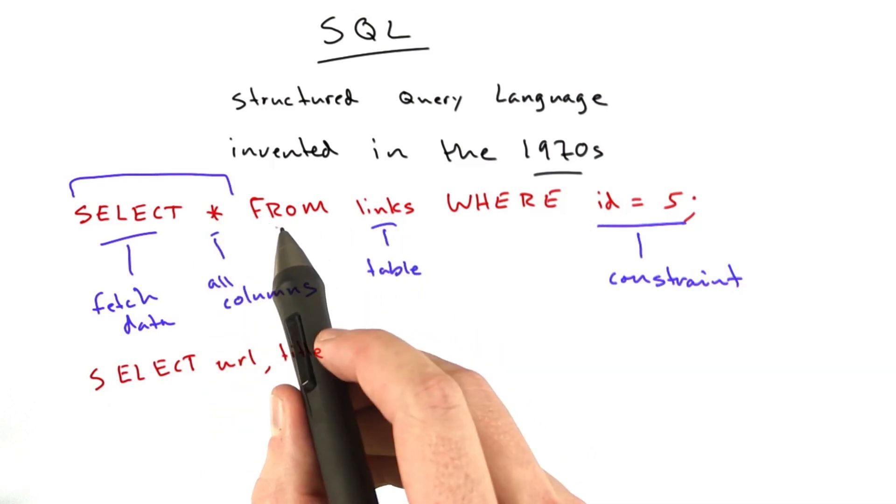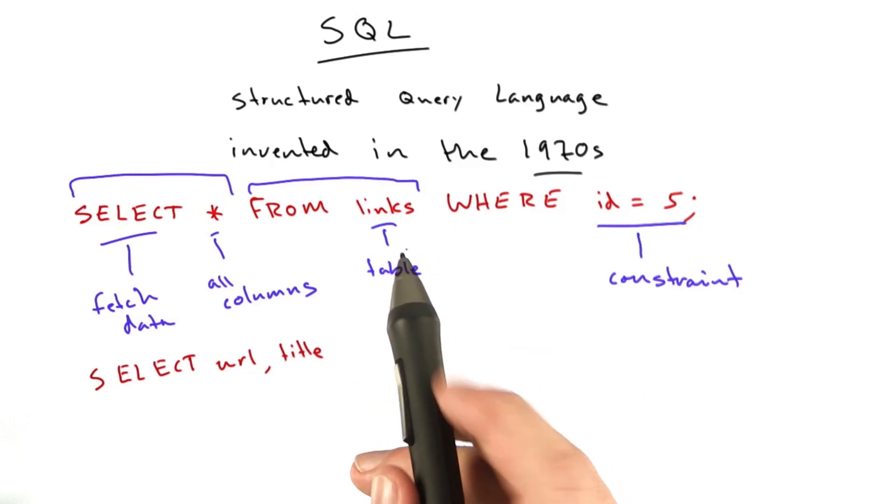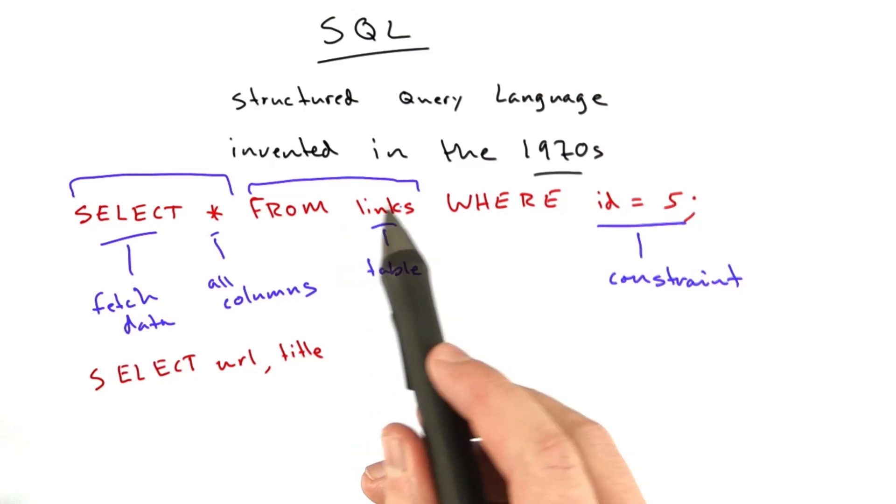Now from, this is the from clause right here. This is where we're going to fetch the data from. So we've only talked about really one table, our links table. And in my example, that's what I'm going to use.